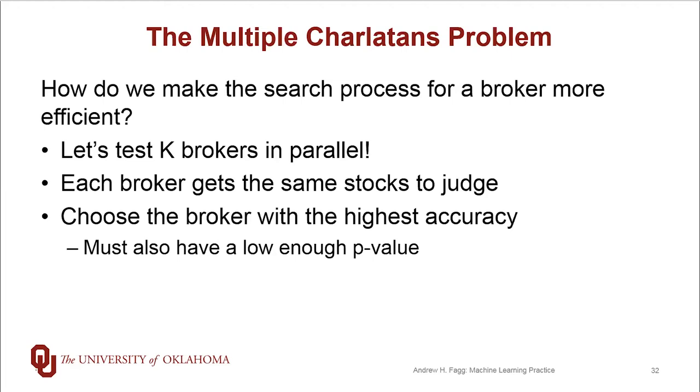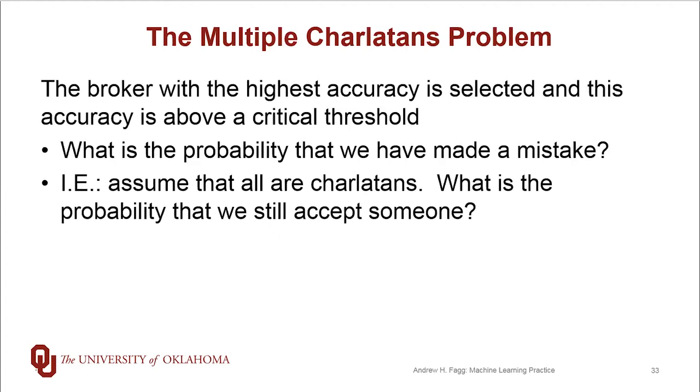Each broker gets the same set of stocks to judge. And then the algorithm is that we're going to choose the broker with the highest accuracy. However, we have this criterion that this broker must also have a key value, say, less than 0.5. So the question is, what's the probability that we've actually made a mistake in this process?